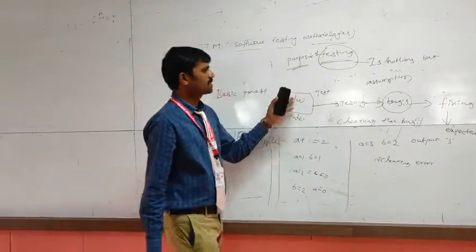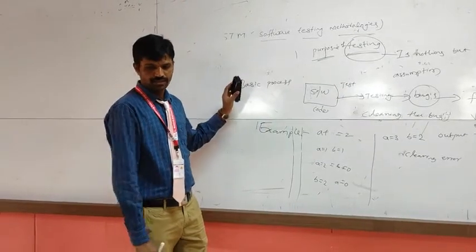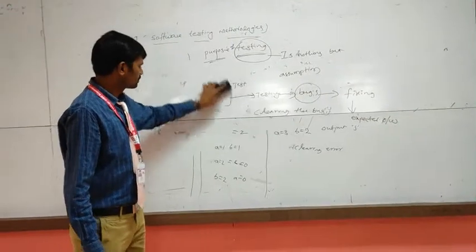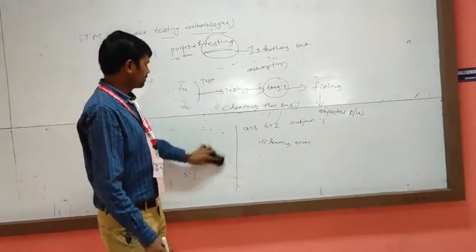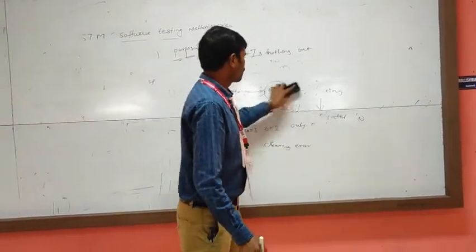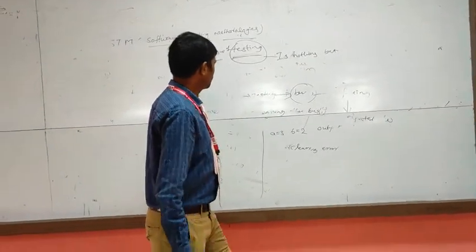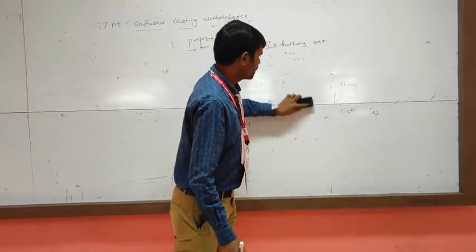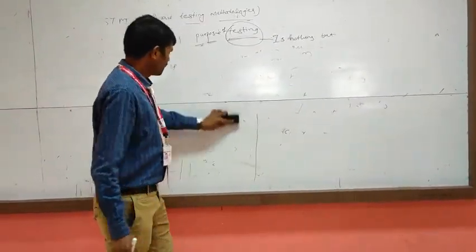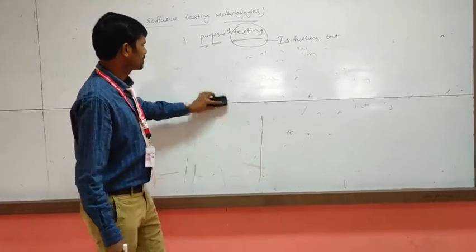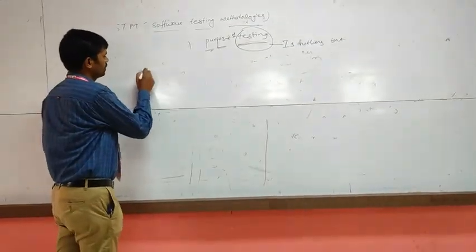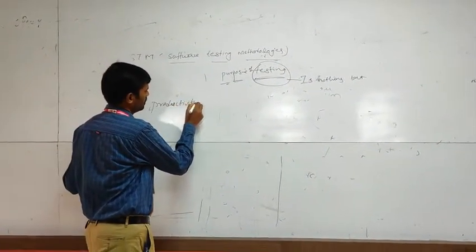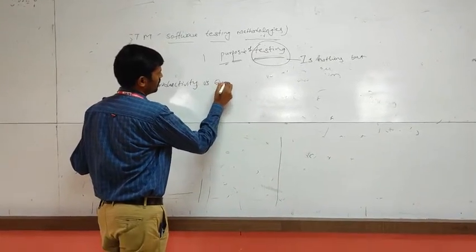This is for the purpose of testing. Next, we are going to start productivity versus quality. Productivity versus quality — quality is mainly concentrated on certain processes.